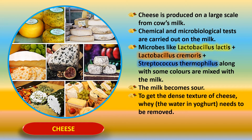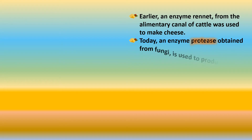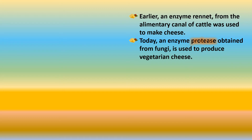Yogurt formed from this process is more fluid than cheese. To get the dense, thick texture of cheese, the watery part — called whey — that remains in yogurt needs to be removed. Earlier, an enzyme called rennet, taken from the alimentary canal of cattle, was used to make cheese. Today an enzyme called protease, obtained from fungi, is used to produce vegetarian cheese.